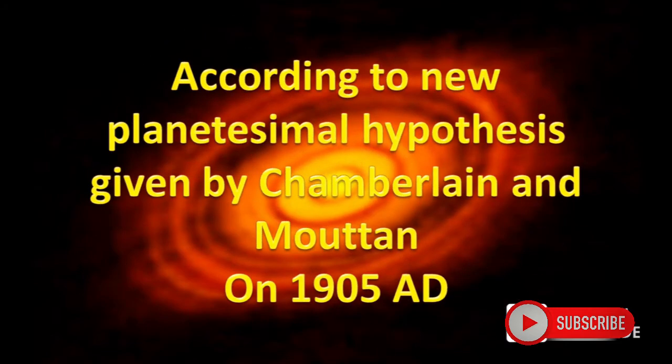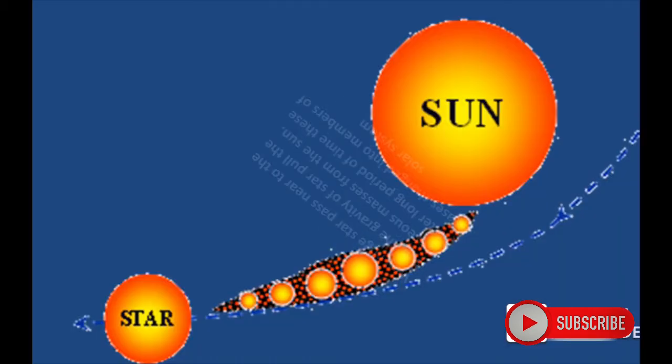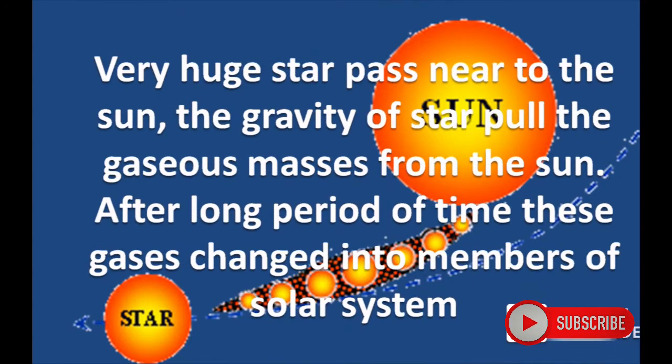According to the new planetesimal hypothesis given by Chamberlin and Moulton in 1905 A.D., a very huge star passed near to the sun. The gravity of the star pulled gaseous masses from the sun. After a long period of time, these gases changed into members of the solar system.